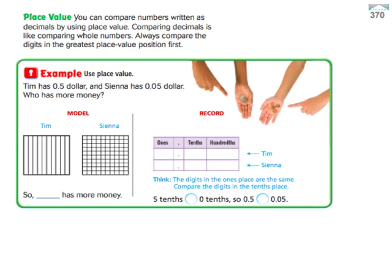Let's do an example of this. Tim has five tenths of a dollar. So I'm going to color in five of these. Three, four, five. And Sienna has five hundredths of a dollar. Who has more money? One, two, three, four, five. We can obviously see from our model that Tim has more money. So the model was helpful in that one.